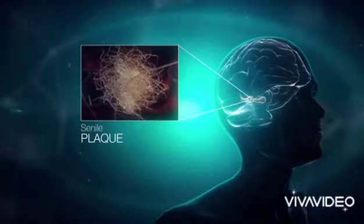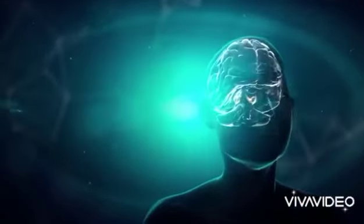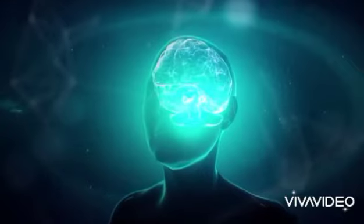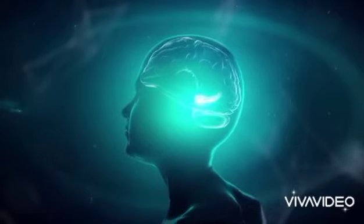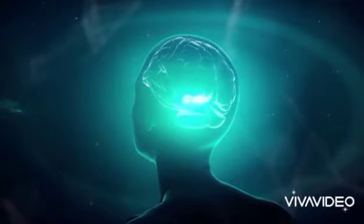Senile plaques develop differently. They are initially observed in the cortex, secondly in the hippocampus, and then the senile plaques reach the whole brain following a centripetal movement.